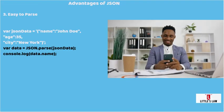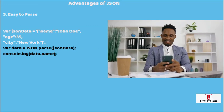The third advantage is that JSON is easy to parse. JSON can be easily parsed and processed by a wide range of programming languages and platforms, making it a versatile and flexible data interchange format. For example, the following code in JavaScript demonstrates how to parse a JSON data structure, showing how easy it is to work with JSON in JavaScript.